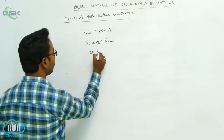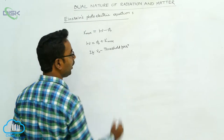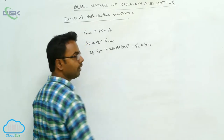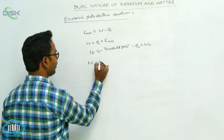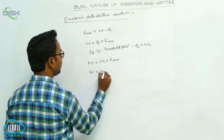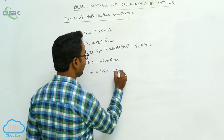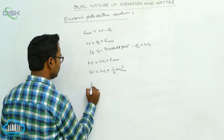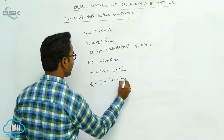If ν₀ is the threshold frequency, then the work function φ₀ can be written as φ₀ = hν₀. So we write: hν = hν₀ + K_max, meaning the maximum kinetic energy of the photoelectron can also be written as ½mv²_max. Therefore, ½mv²_max = h(ν − ν₀).